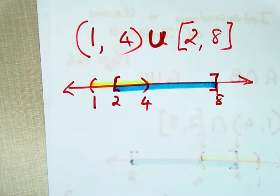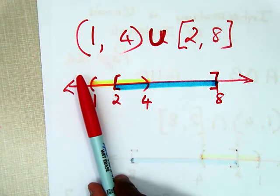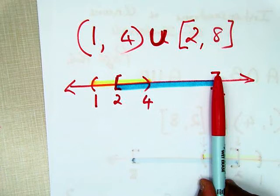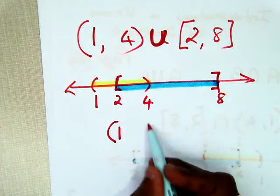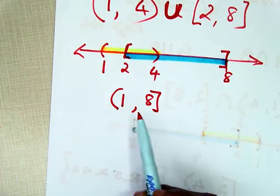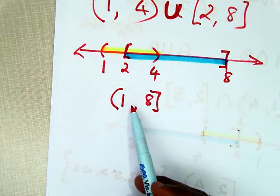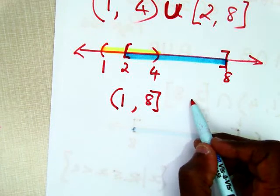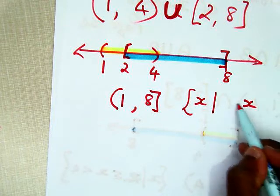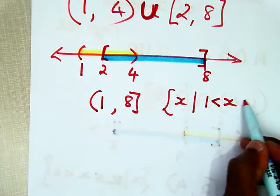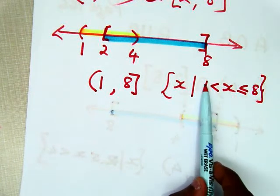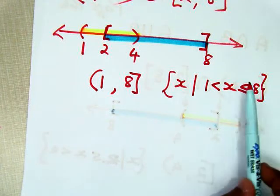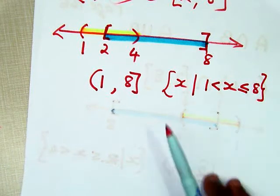Remember, union is all the items that are in each set. So for this solution I'm going to start at 1 and go all the way up to 8, which includes all the numbers. Starting at 1 with a parenthesis and all the way up to 8 with a square bracket — that would be the answer in interval notation: (1, 8]. In set-builder notation it's x such that x is greater than 1 but less than or equal to 8. Notice that the parenthesis means greater than 1, while the square bracket tells you that 8 is included, so it's less than or equal to 8.